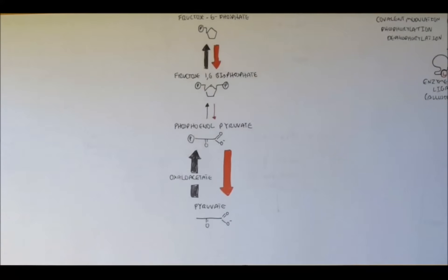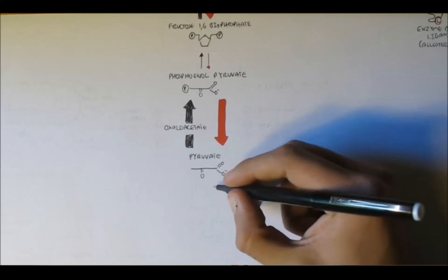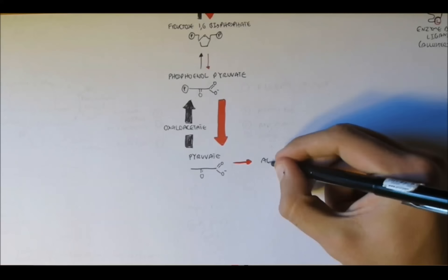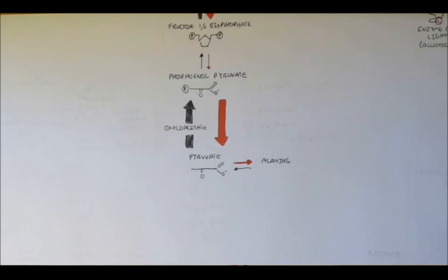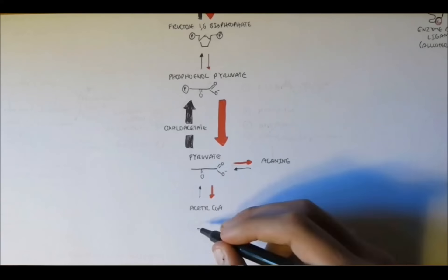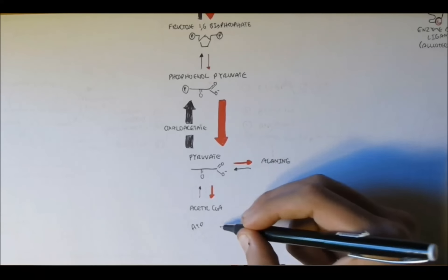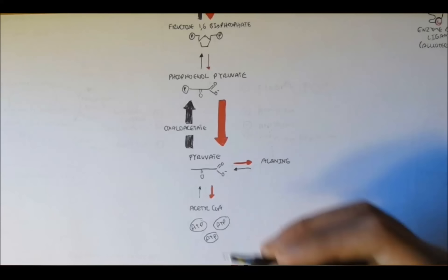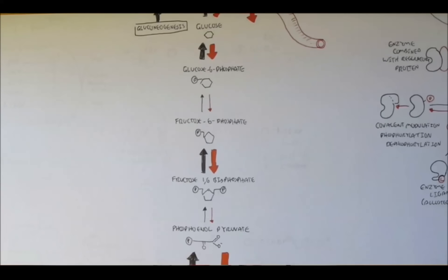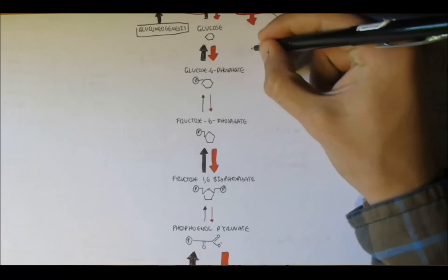Pyruvate has a number of fates: it can convert to alanine, an amino acid, which can then be stored in the muscle. Or pyruvate can convert to acetyl-CoA for the Krebs cycle, and further on to oxidative phosphorylation to produce more ATP. Now let's look at the three irreversible reactions in glycolysis that control glycolysis itself, as well as gluconeogenesis, and what features regulate and control these reactions.